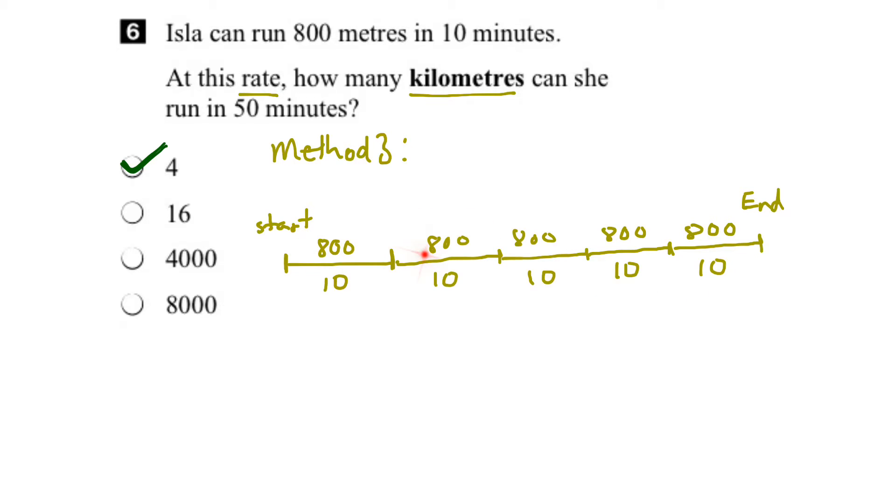we've run 800, plus 800, which is 1600, plus 800, which is 2400, plus 800, which is 3200, plus 800, which is 4000 meters. So this total distance from start to end is 4000 meters.